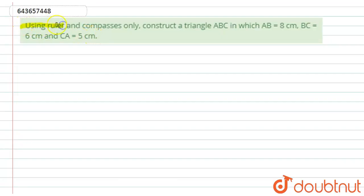Here we have: Using ruler and compasses only, construct a triangle ABC in which AB is equal to 8 centimeter, BC is equal to 6 centimeter, and CA is equal to 5 centimeter. Okay, so for this let's start with the solution.